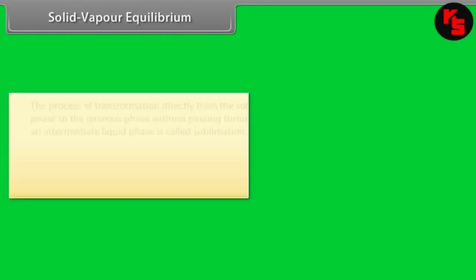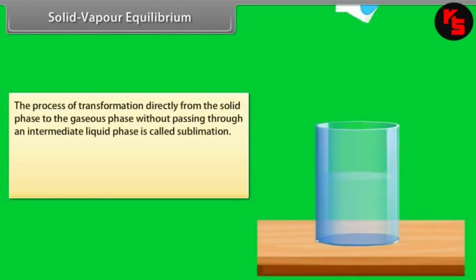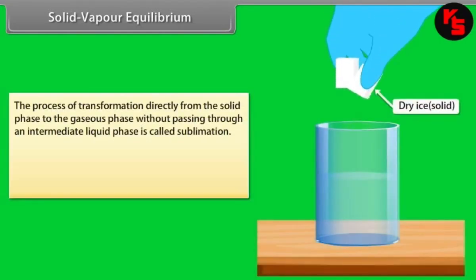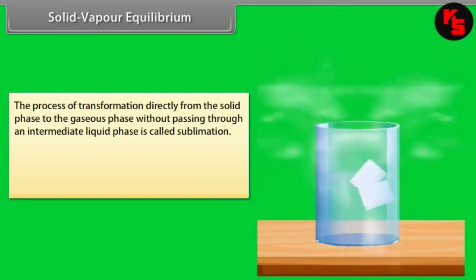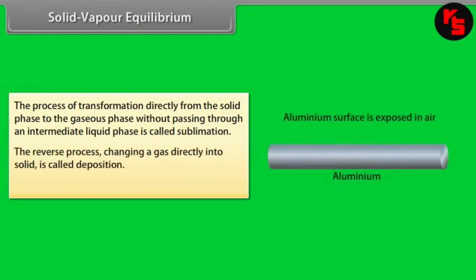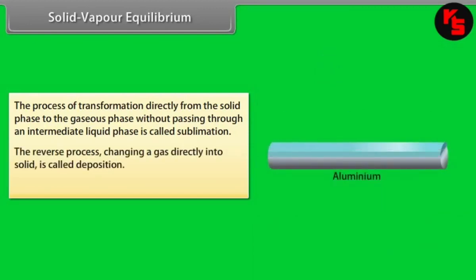Solid-Vapor Equilibrium. The process of transformation directly from the solid phase to the gaseous phase without passing through an intermediate liquid phase is called sublimation. The reverse process — changing a gas directly into solid — is called deposition. For example, dry ice.